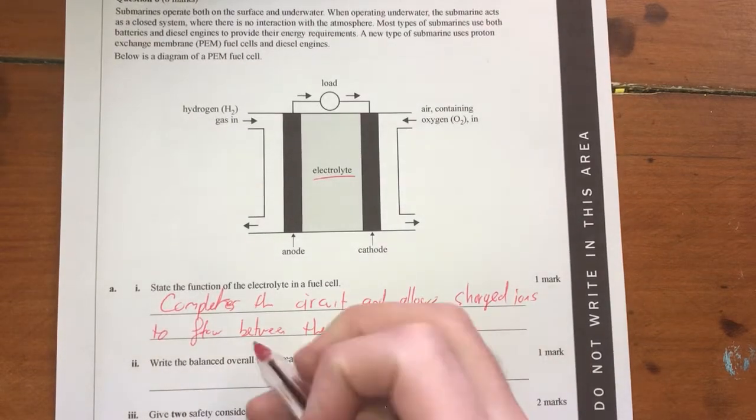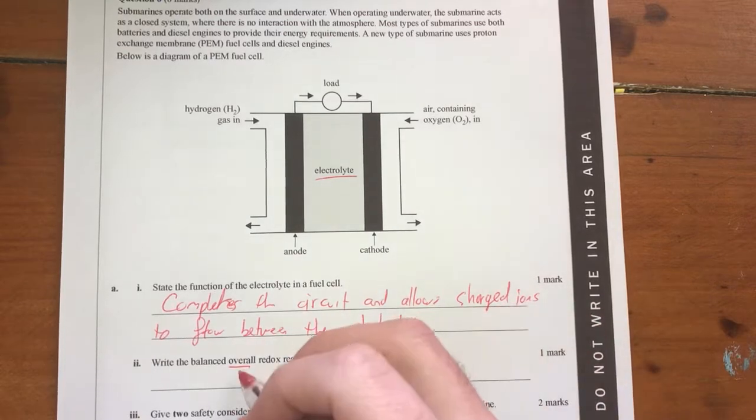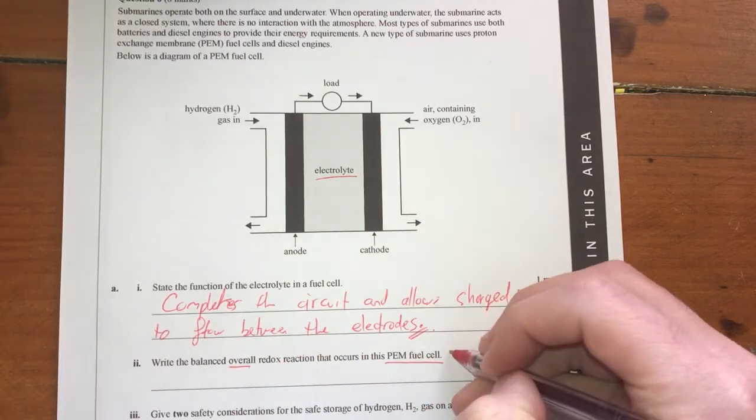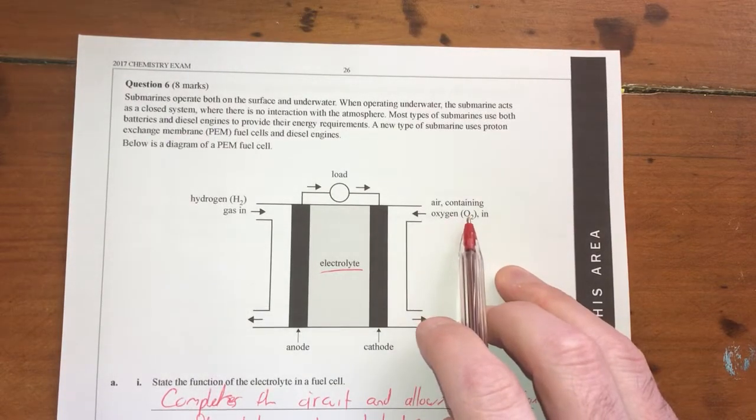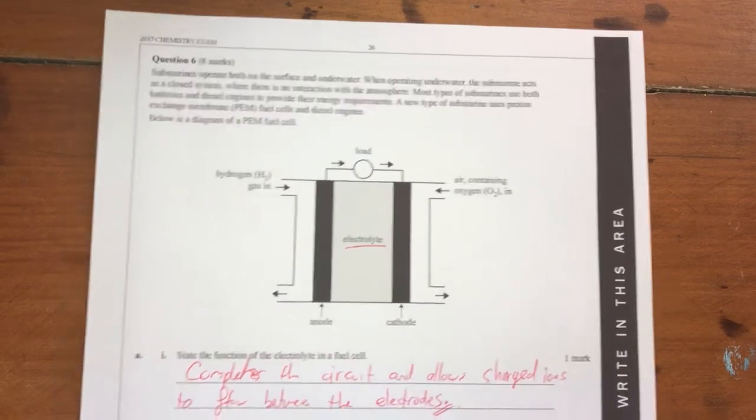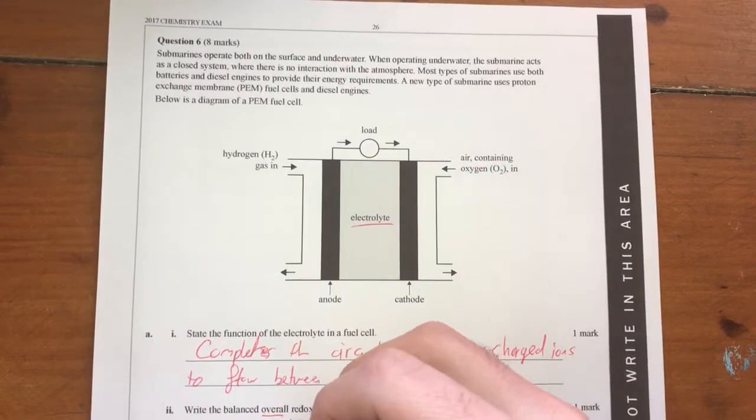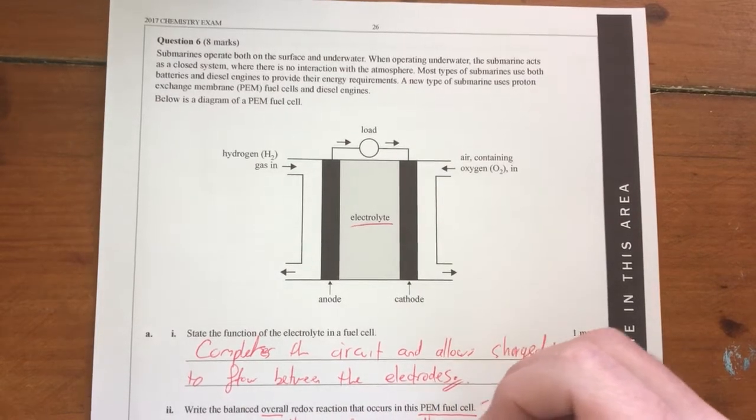Next question. Write a balanced overall redox reaction for this PEM fuel cell. Any overall redox reaction for a fuel cell is basically the same as a combustion reaction, especially if you're using, well, if you're using an oxygen-based fuel cell, you can expect it to be the same as the combustion reaction. So all we're looking at here is H2 plus O2 forms H2O.